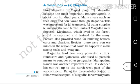Many rivers such as the Ganga and Son flowed through Magadha. This was important for transport, water supply, and making the land fertile. Parts of Magadha were forested. Elephants which lived in the forest could be captured and trained for the army. The forest also provided wood for building houses and carts.